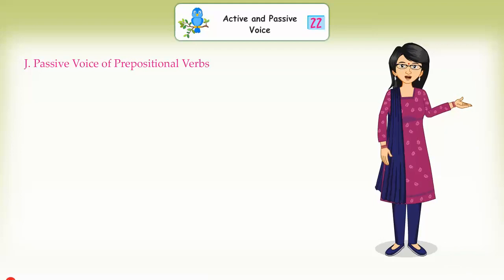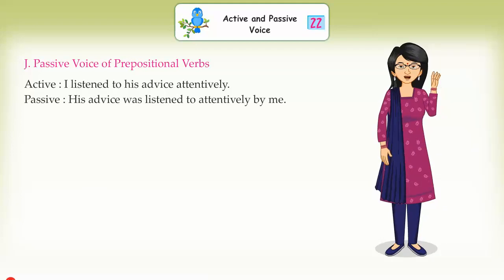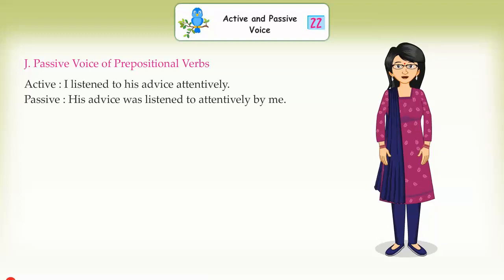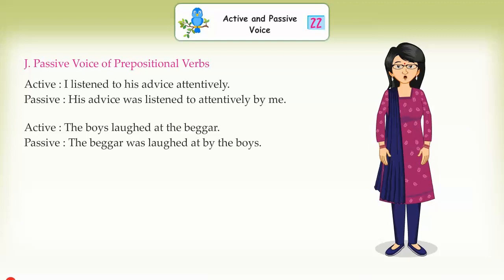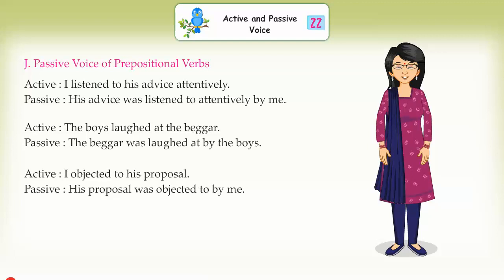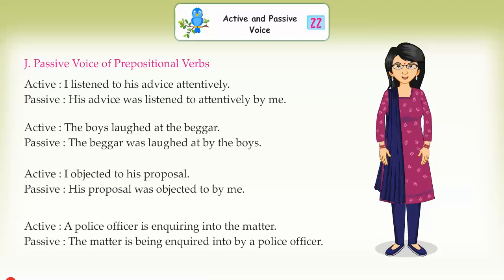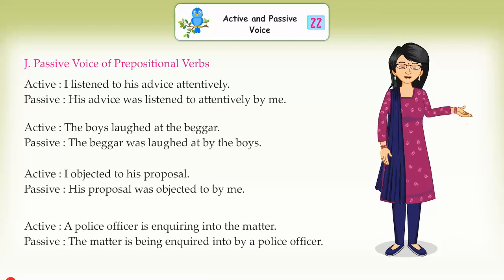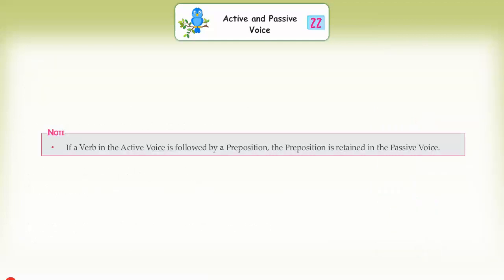Passive voice of prepositional verbs. Active: 'I listened to his advice attentively.' Passive: 'His advice was listened to attentively by me.' Active: 'The boys laughed at the beggar.' Passive: 'The beggar was laughed at by the boys.' Active: 'I objected to his proposal.' Passive: 'His proposal was objected to by me.' Active: 'A police officer is inquiring into the matter.' Passive: 'The matter is being inquired into by a police officer.' Note: if a verb in the active voice is followed by a preposition, the preposition is retained in the passive voice.